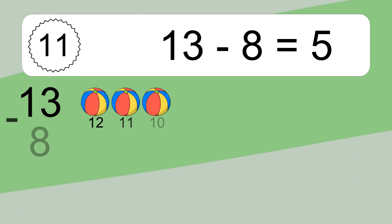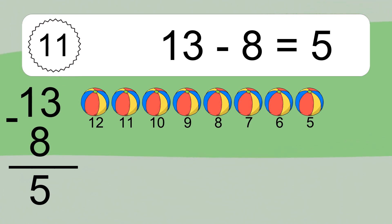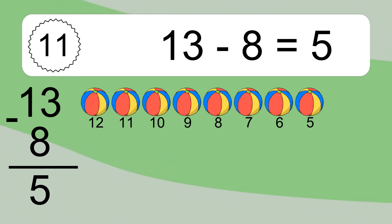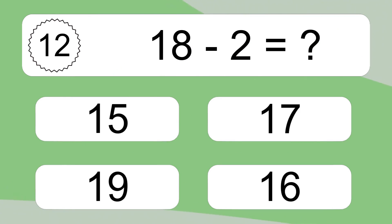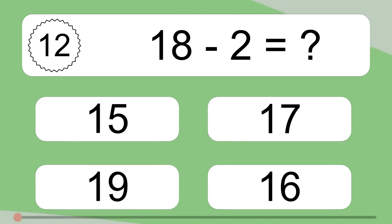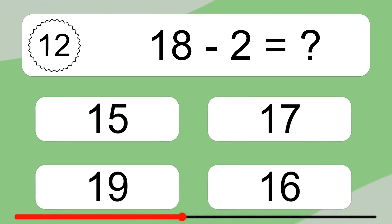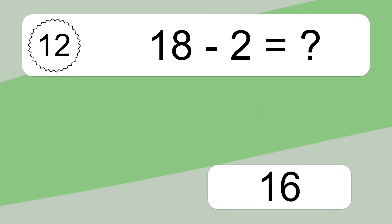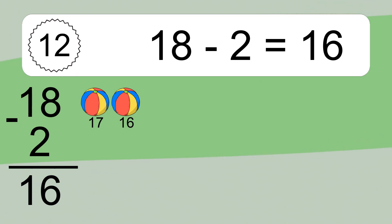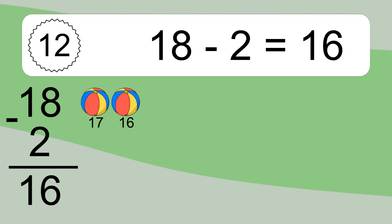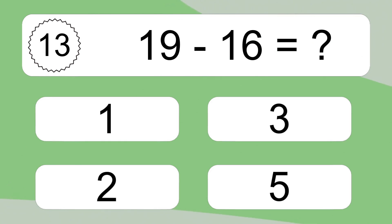13 minus 8 equals 5. Let's count it: 12, 11, 10, 9, 8, 7, 6, 5. 18 minus 2 equals what? 18 minus 2 equals 16. Let's count it: 17, 16. 19 minus 16 equals what?